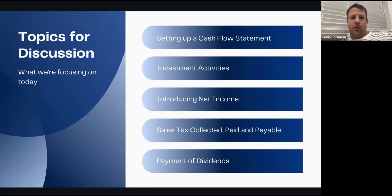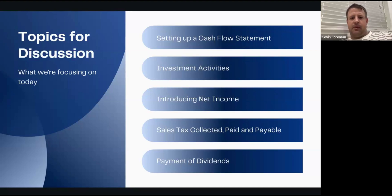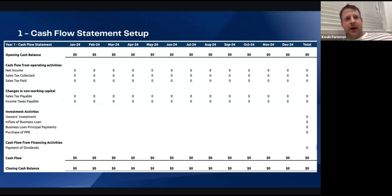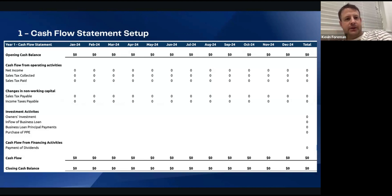So what we have here are some of the major things we're going to be covering today: setting up a cash flow statement, investment activities, introducing net income, sales tax collected, paid and payable, and payment of dividends. The income statement is pretty linear — you're breaking down the revenue, operating expenses, and net income. Everything we do in this cash flow statement is going to be based on that. The process is income statement first, then your cash flow statement, and then shifting over to the balance sheet last. In a nutshell, the cash flow statement is the inflow and outflow of cash in the actual business account.